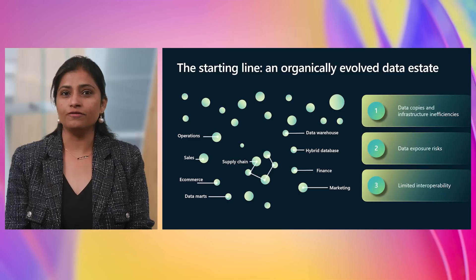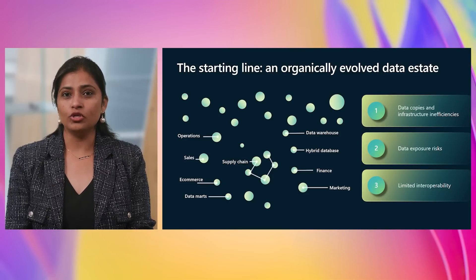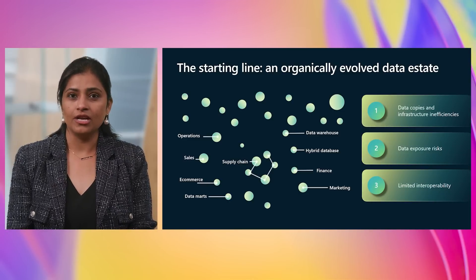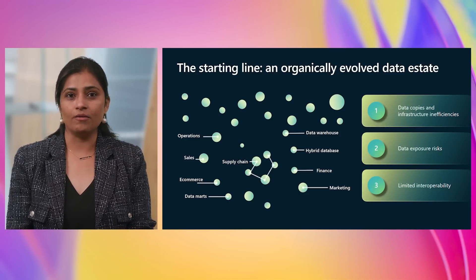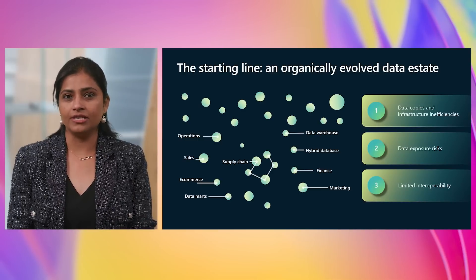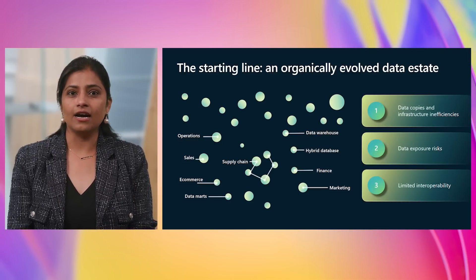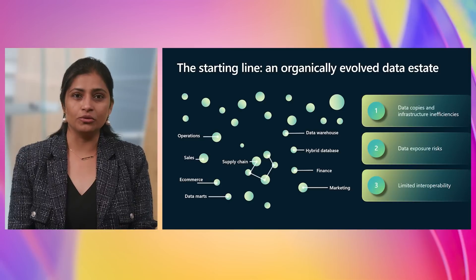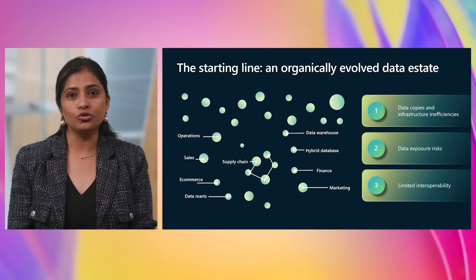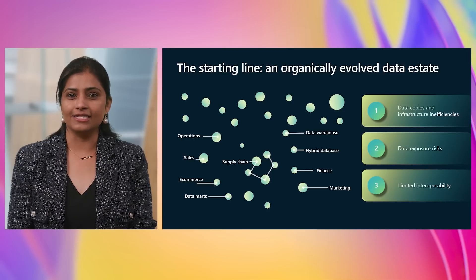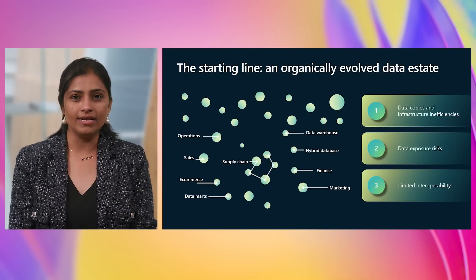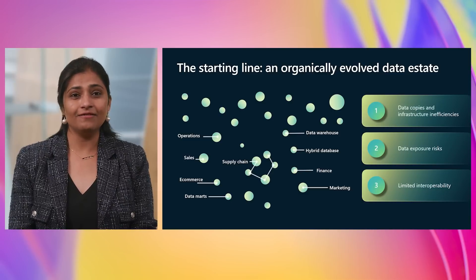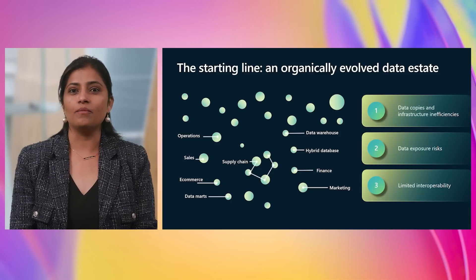Data copies get out of sync fast. Reports from one part of the organization that should line up with data from another are showing major inconsistencies. Data can't be combined for further analysis because different teams use different data formats and tools don't integrate well, or at all. And your lead data steward is sending you daily emails identifying one data risk after another. It's enough to keep any data leader up at night.